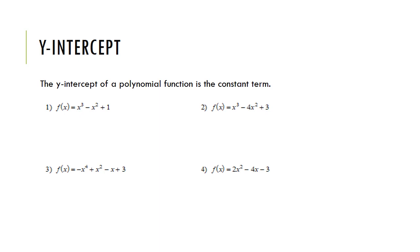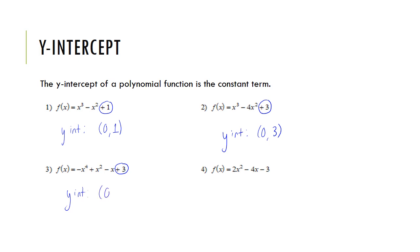Looking at the last example, the highest exponent is 2, so this function has 2 roots. The y-intercept of a polynomial function is the constant term — the term that has no variable. For number 1 it's 1, so the y-intercept is (0, 1). For number 2 we have a positive 3, so the y-intercept is (0, 3). For number 3, the constant is also positive 3, so the y-intercept is (0, 3). For the last one, it's minus 3, so the y-intercept is (0, −3). If a function does not have a constant term, the y-intercept would be (0, 0).